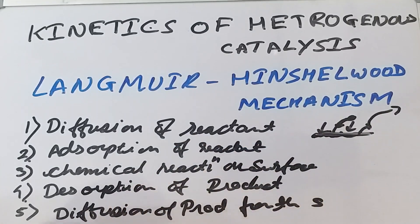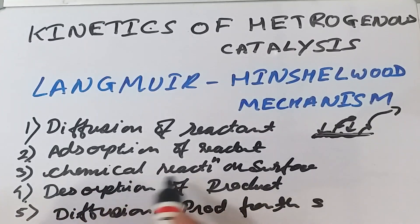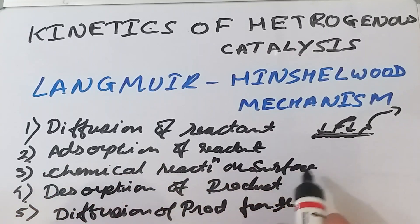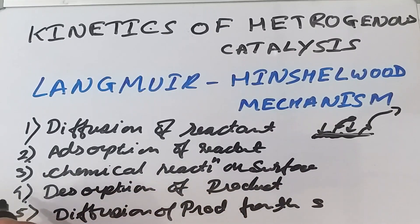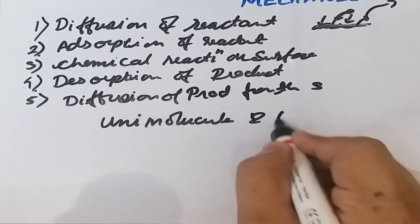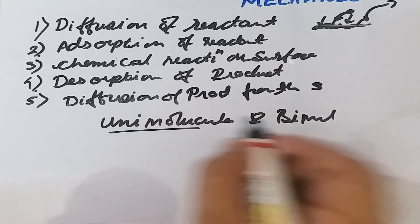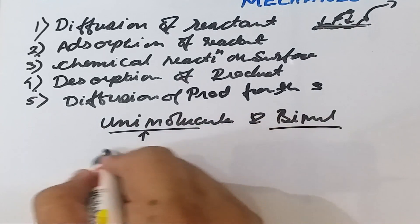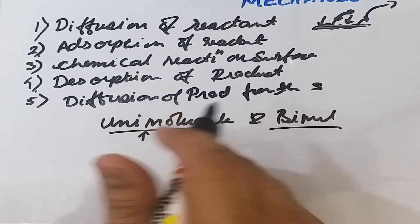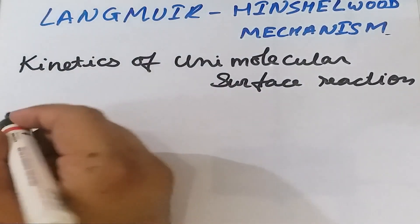The rate of the chemical reaction depends on how the reaction is taking place on the surface. Both unimolecular and bimolecular surface reactions are possible. In this lecture we will discuss the kinetics of unimolecular surface reactions, and in the next lecture we will discuss the kinetics of bimolecular surface reactions.